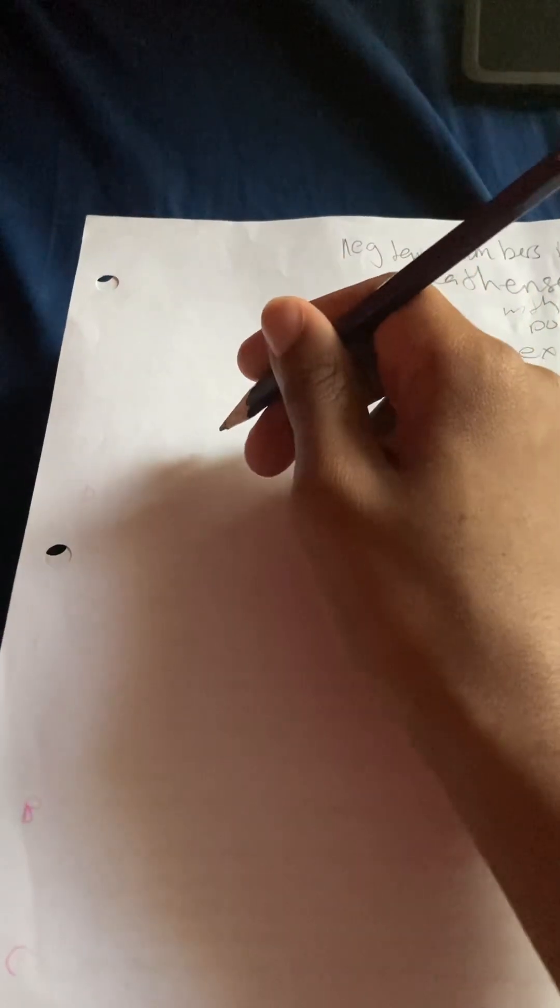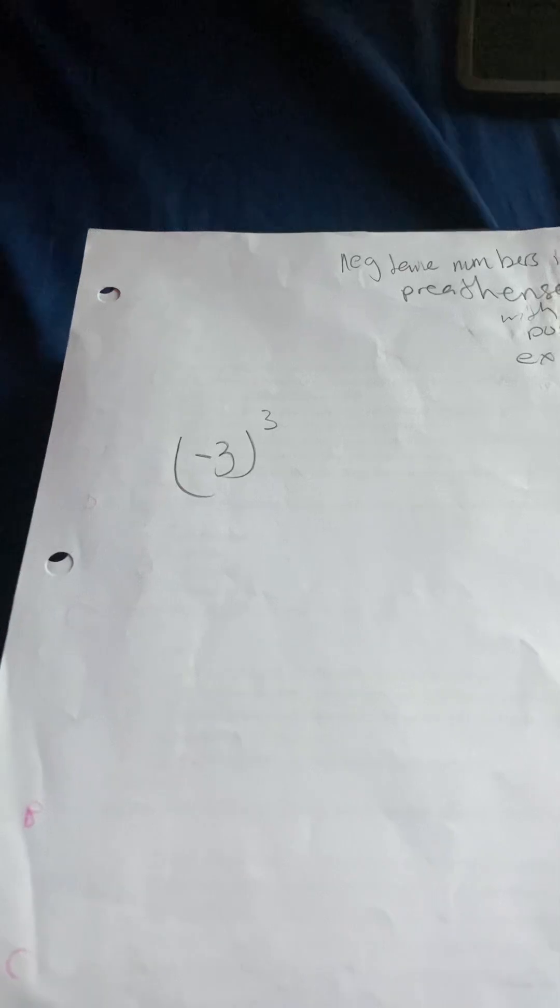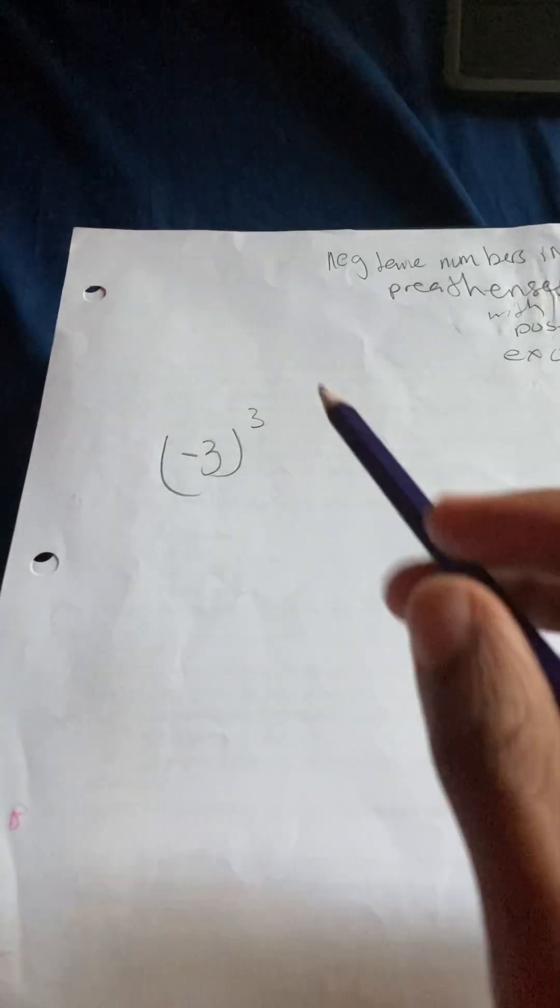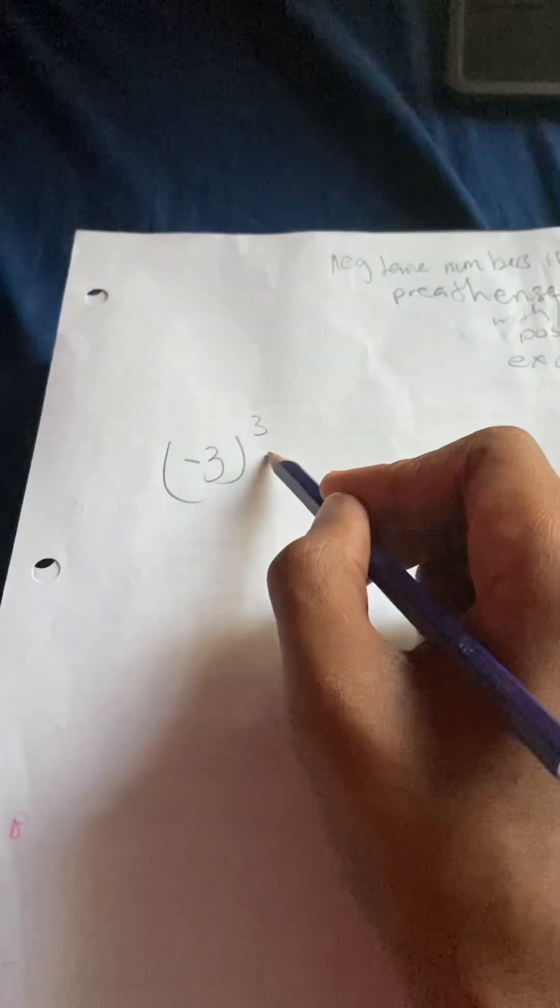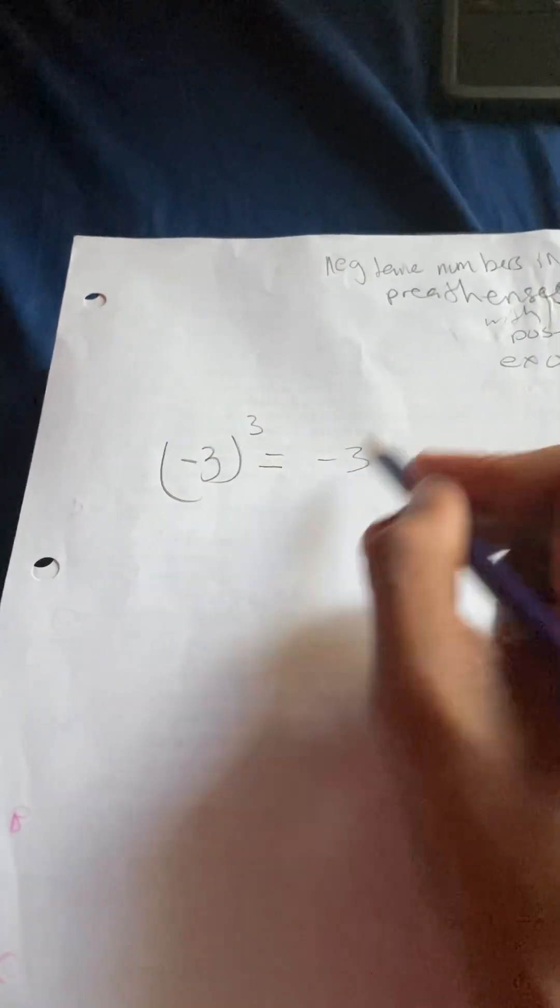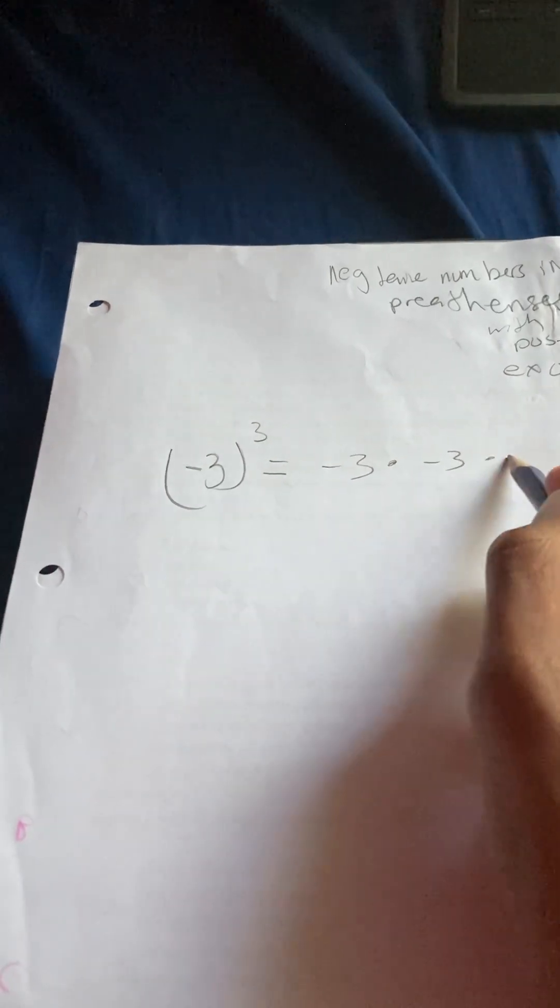Here's an example. We're gonna do negative 3 to the third power. The exponent is telling us how many times you have to multiply negative 3. So it's going to be equal to negative 3 times negative 3 times negative 3.